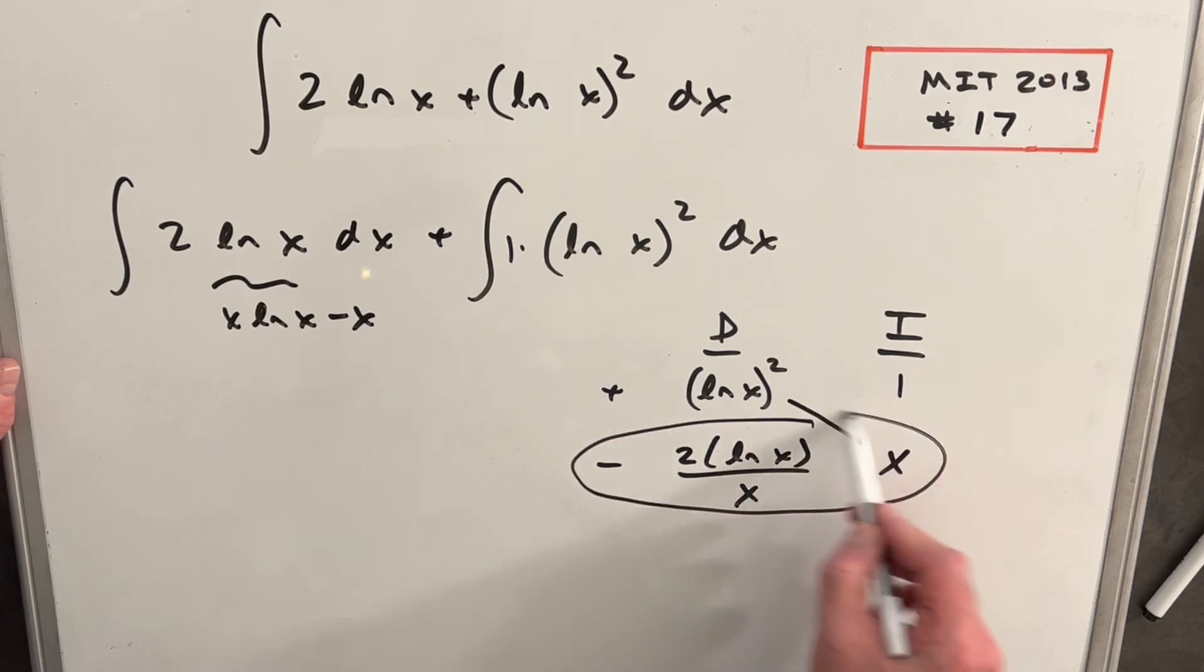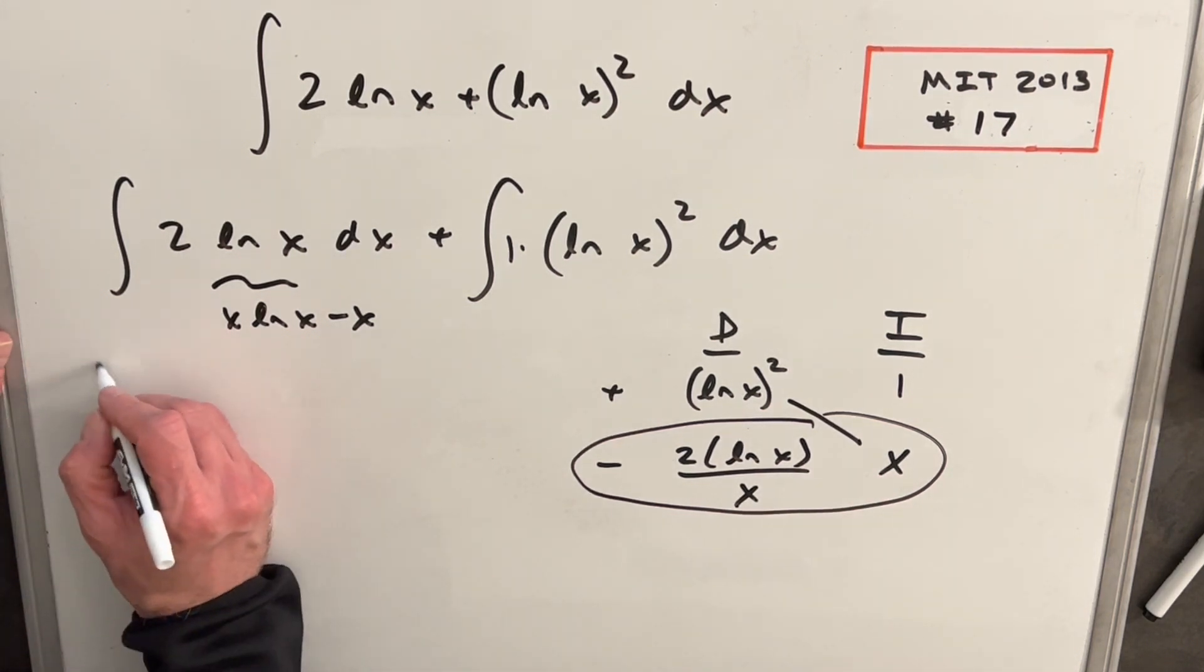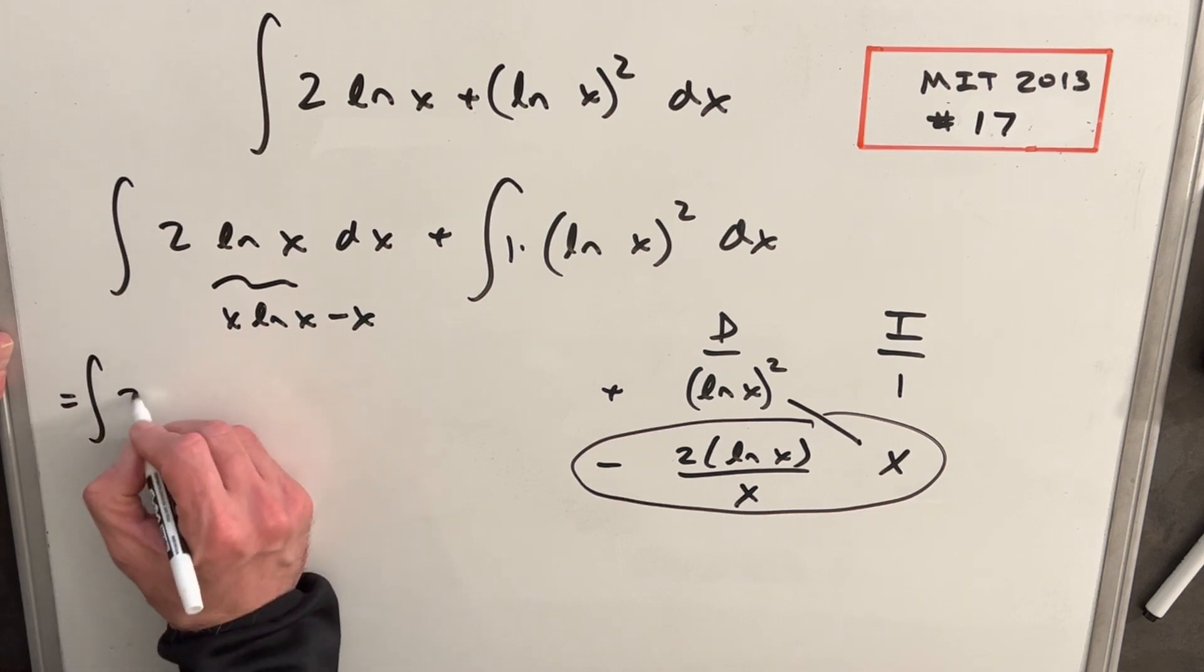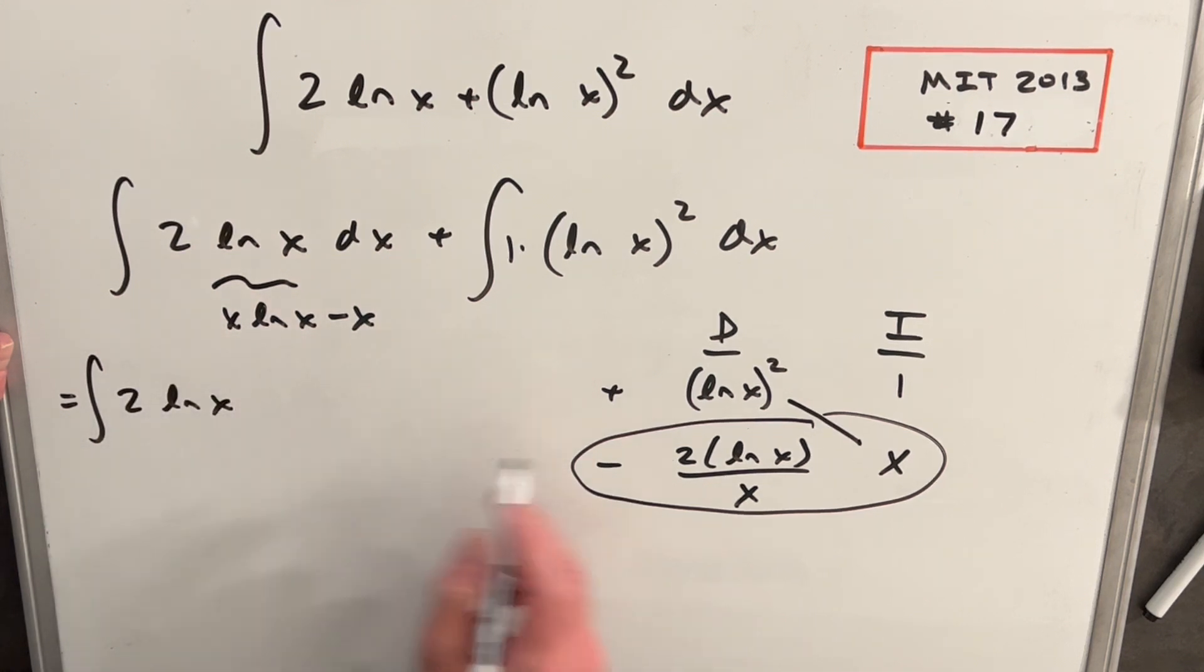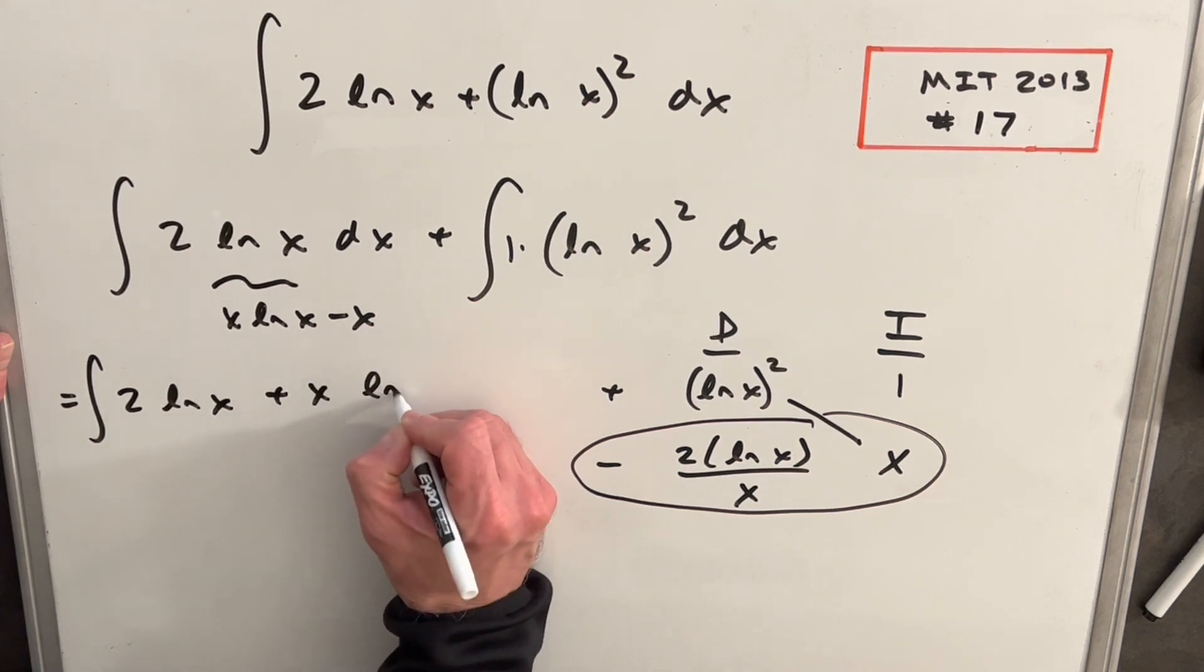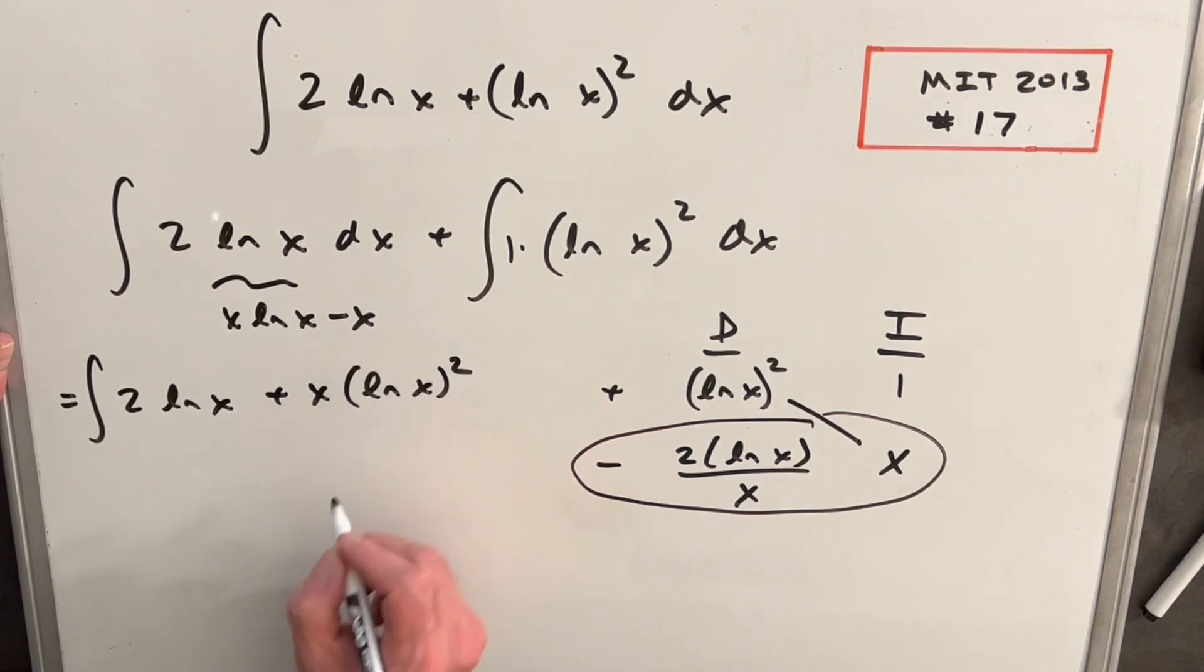We need to integrate this. What's going to happen here is this x and this x is going to cancel. So summarizing everything we have, we have this integral 2 ln x, then this diagonal term, we have x ln x squared.